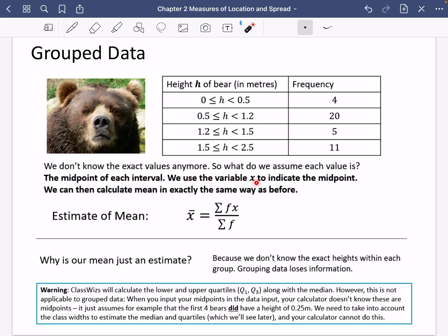We use the variable x to indicate the midpoint, and we can then calculate the mean in exactly the same way as before. So the estimate of the mean, and it's an estimate which I will explain in just a second, is you will then do the sum of f of x over the sum of f. But remember how you'll see that on the calculator. It's just going to be the sum of x over n.